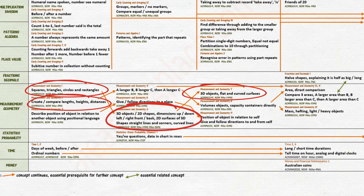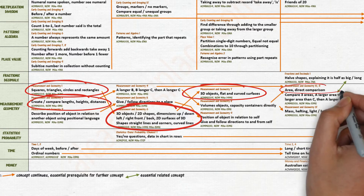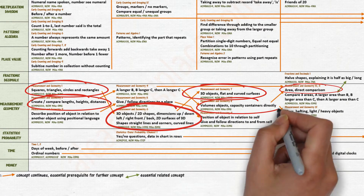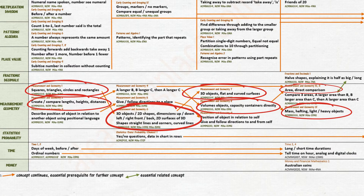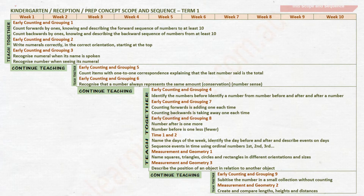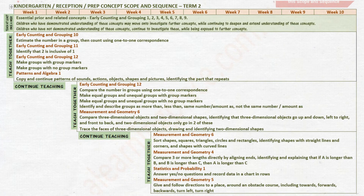They describe length as length, height and distance, and compare length, area, volume and capacity, and mass informally. Pages 2 to 5 contain a term-by-term sequence of concepts taught in the first year of school.